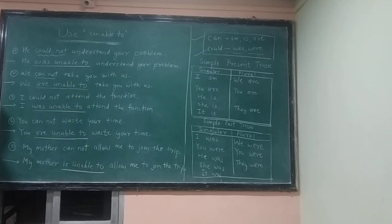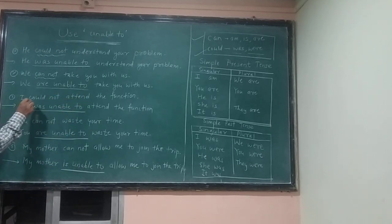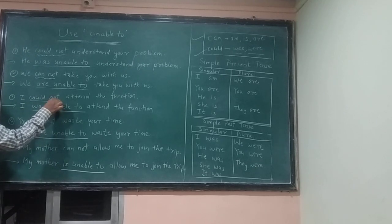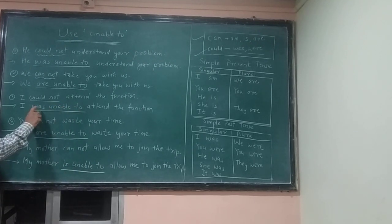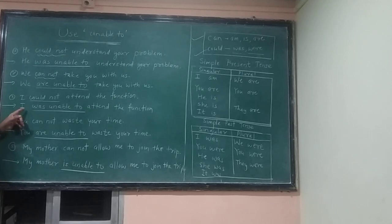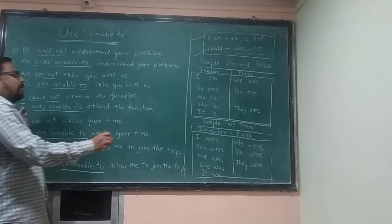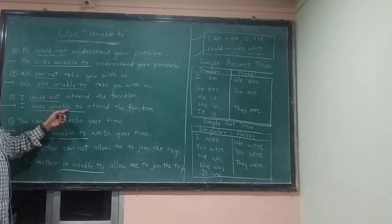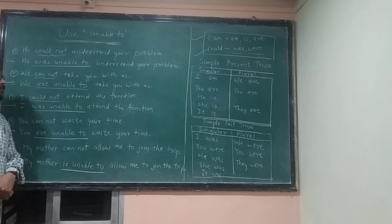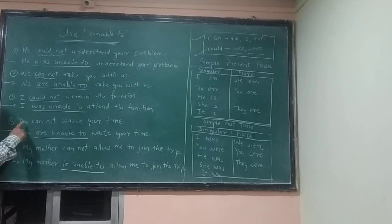Next sentence: 'I could not attend the function.' We remove 'could not.' Because it is past tense with 'could,' we use 'was.' So the sentence becomes: 'I was unable to attend the function.'